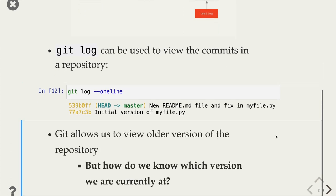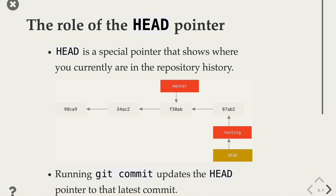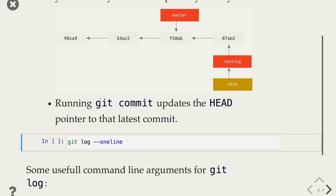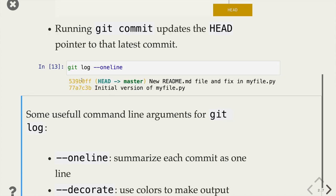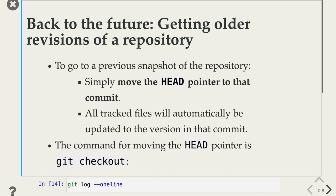How do we know which version we're currently looking at? That's what the HEAD pointer is. All these versions of history — the current version, the previous, and its parents — can have many names. HEAD is a special name that refers to what you're currently looking at. Right now I might be looking at one version while the master branch refers to another. Running git commit updates the HEAD pointer to the latest commit. In the log, we can see HEAD is referring to the current version.